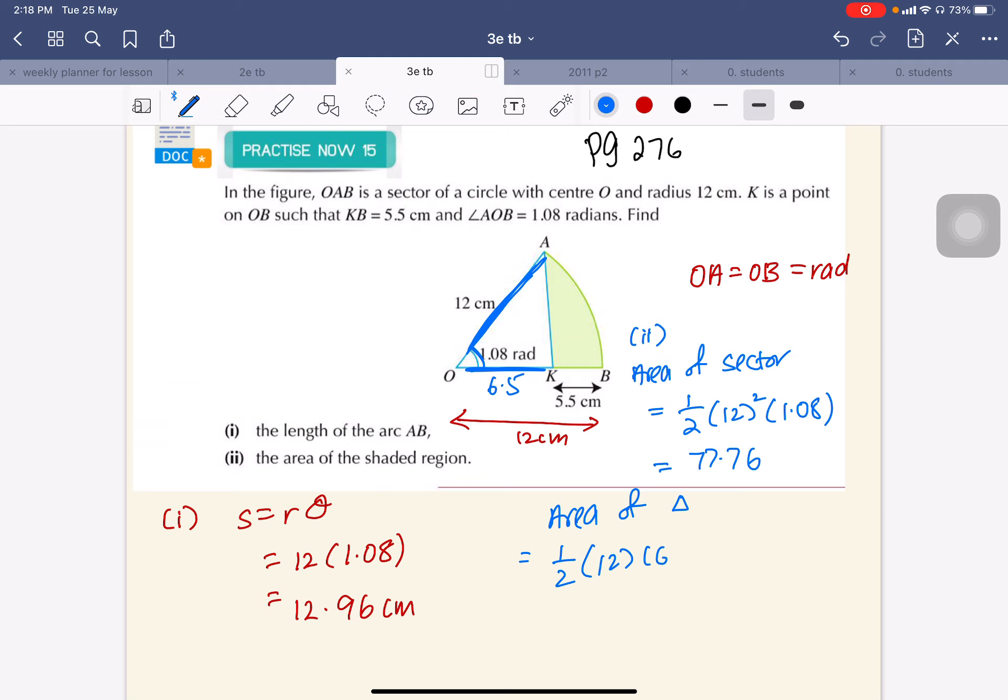Half a b sine C. Now, because you're taking sine of an angle in radians, make sure your calculator is in radian mode.